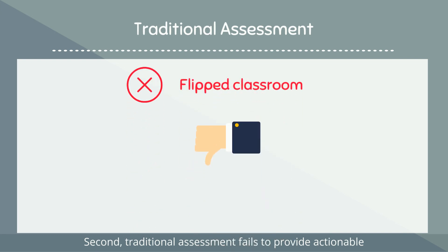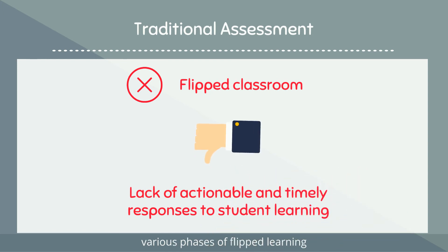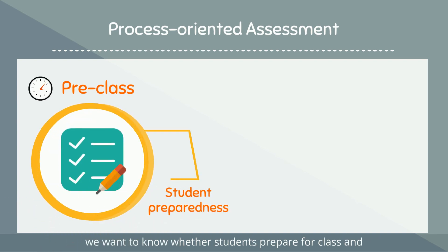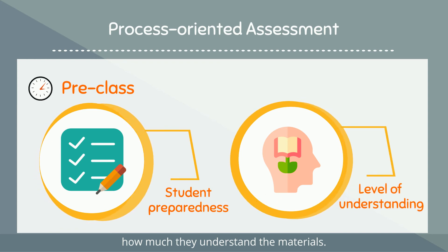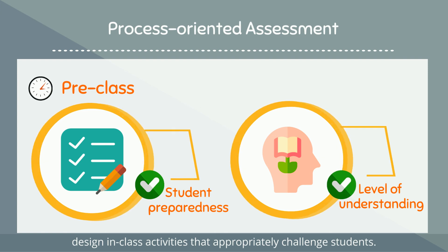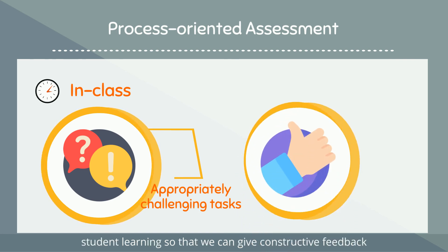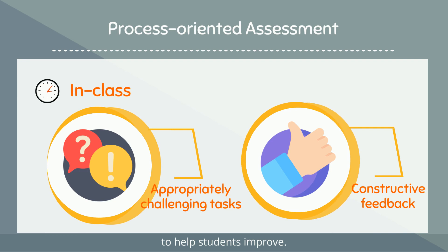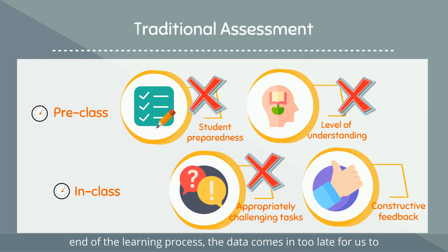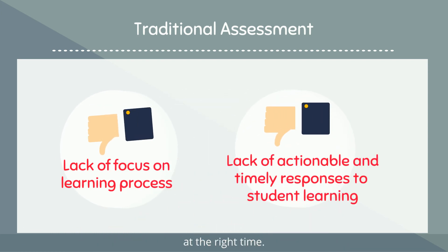Second, traditional assessment fails to provide actionable and timely information about student learning in various phases of flipped learning. For example, before face-to-face interactions, we want to know whether students prepared for class and how much they understand the materials. Armed with this knowledge, we can design in-class activities that appropriately challenge students. During class, we also need in-the-moment data about student learning so that we can give constructive feedback to help students improve. Because traditional assessment often takes place at the end of the learning process, the data comes in too late for us to adjust teaching and offer the necessary support to students at the right time.